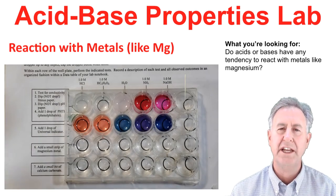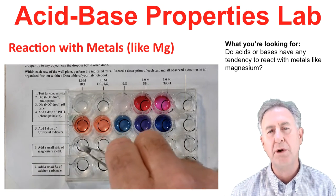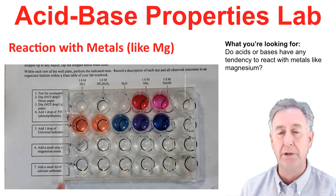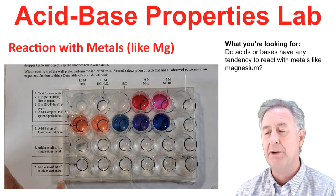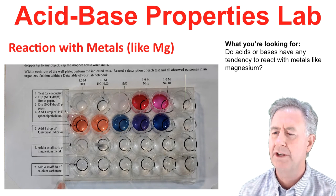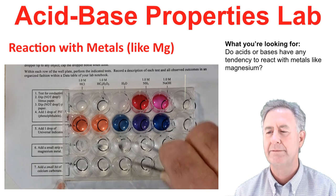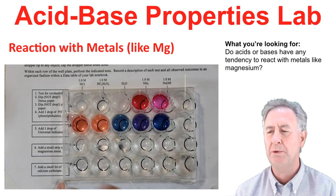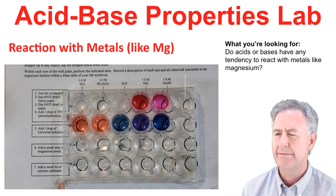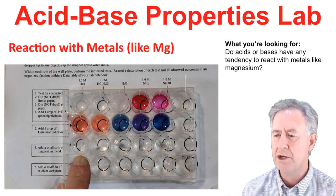Now we're going to run a test to see if acids or bases react with metals such as magnesium. We take a small strip of magnesium and place it in each well. In the first well with strong acid, we notice some bubbling going on. In the weak acid, not so much. In water, no reaction. In ammonia, the weak base, nothing. And finally in NaOH, the strong base, also nothing. Record your observations — there's only one well in which we see a reaction.